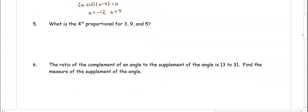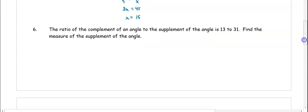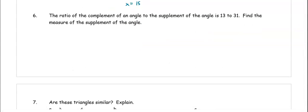In number five, what is the fourth proportional of 3, 9, and 5? Remember that these are the first, second, and third proportional, and our fourth is x. So we have 3 over 9 equals 5 over x. Cross multiplying gives 3x equals 45, and dividing gives x equals 15.